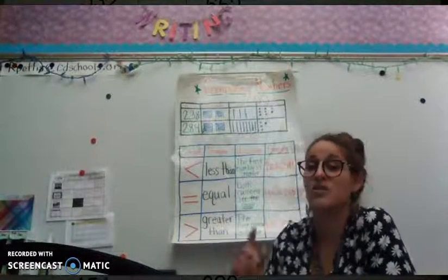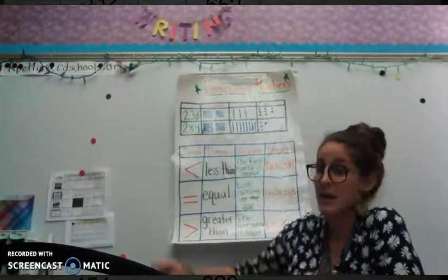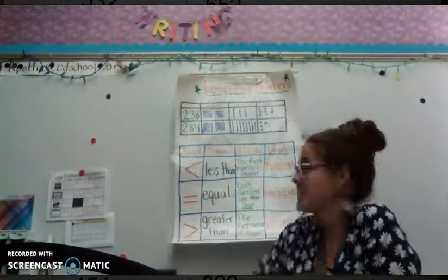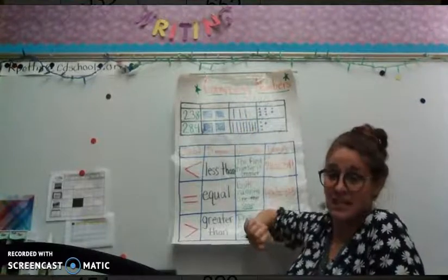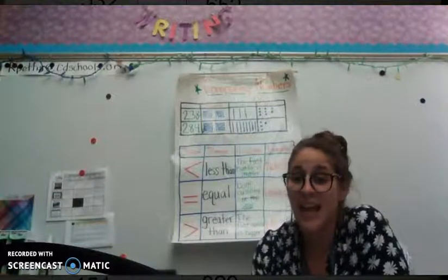So I have to go back to the tens, the next highest place value, and compare them. Here I have a 3 and an 8. Those are different. That's like saying 3 tens sticks or 8 tens sticks. Which one's greater? 8.